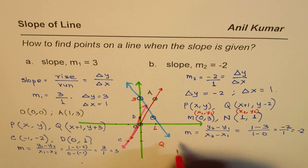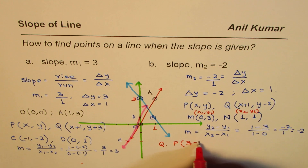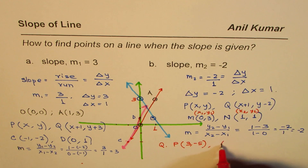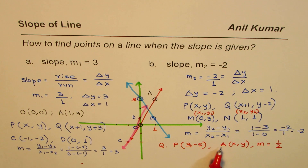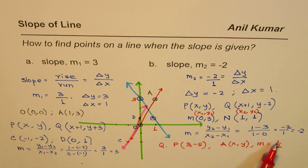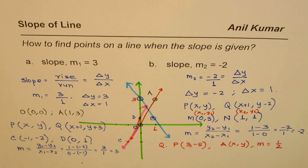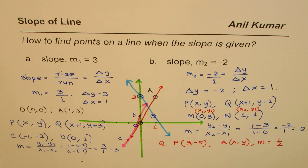Now here's a question for you: given point P with coordinates (3, −5), find another point A with coordinates (x, y) such that the slope of line PA is one half. I hope the concept is clear. I'm Anil Kumar — please share and subscribe to my videos. Thank you and all the best.